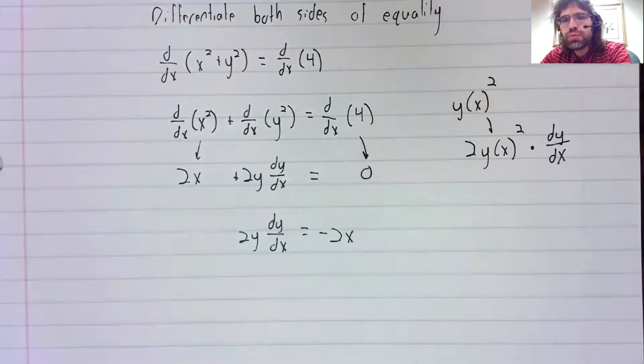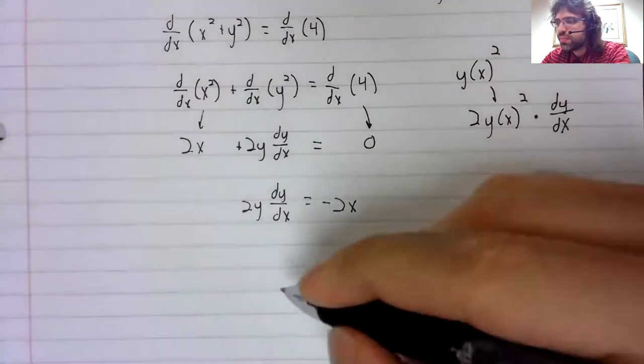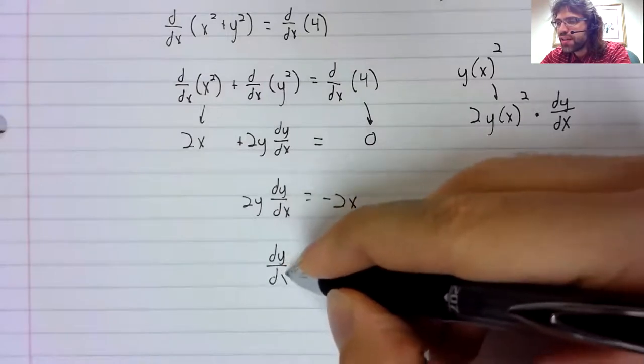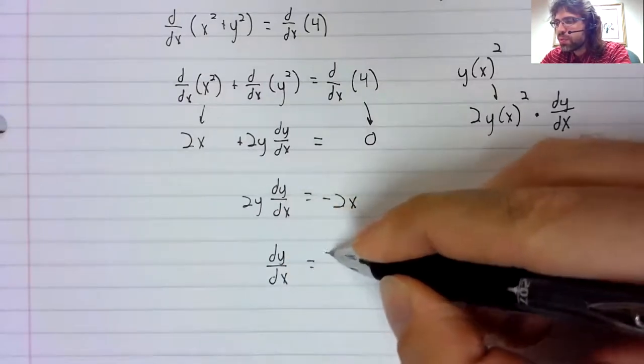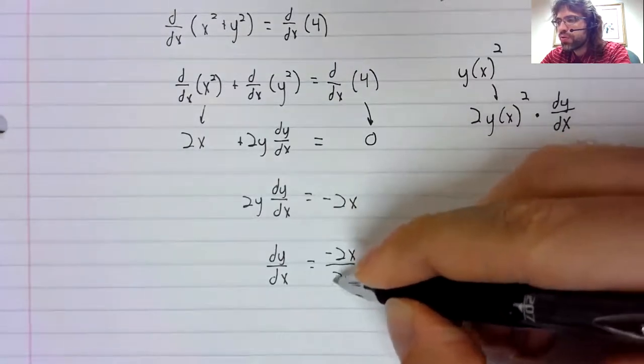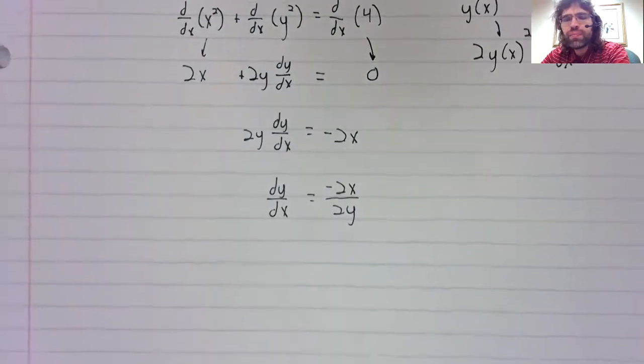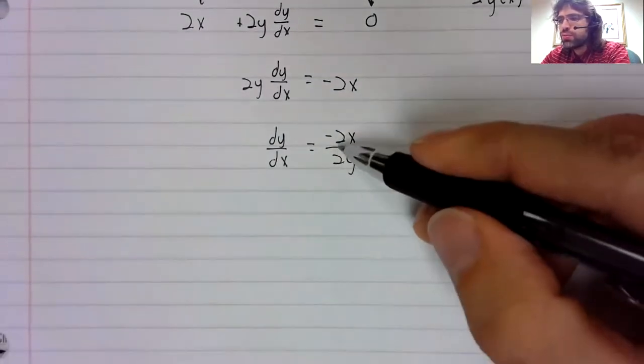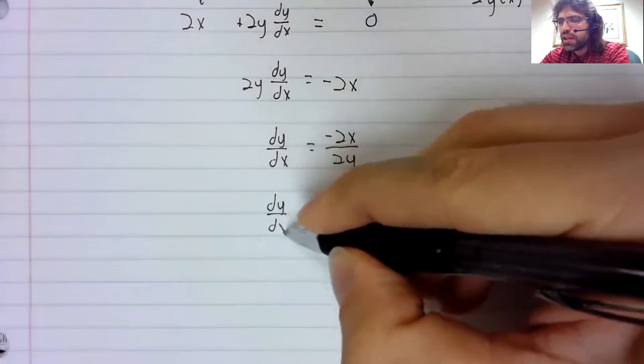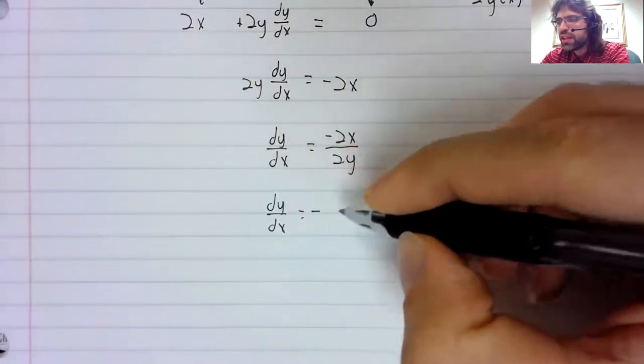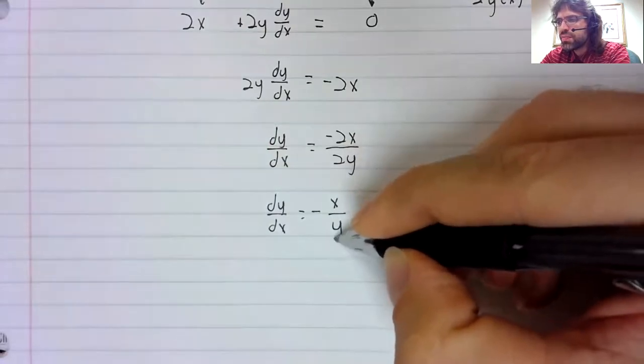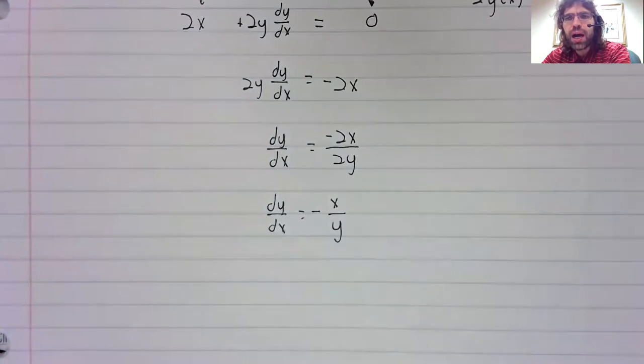dy/dx equals negative 2x over 2y. Our 2s cancel and we get dy/dx equals negative x divided by y.